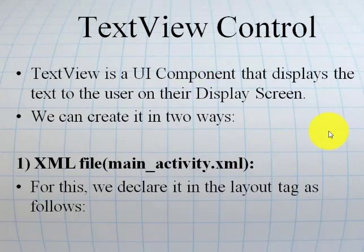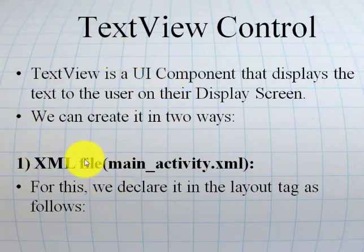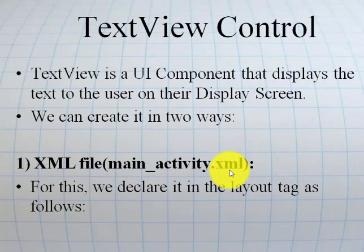There are two ways to create a TextView. First, using an XML file. In Android, two files are very important: one is used for design and one is used for coding — the code-behind file. The design file is your XML file and the .java file is your coding file. Either you can define the TextView using the XML file — that is your main_activity.xml — or you can design your TextView using the coding file, MainActivity.java.